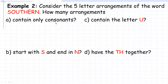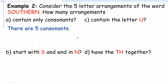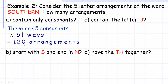In example two, consider five-letter arrangements of the word Southern. How many arrangements contain only consonants? Consonants do not include O, U, or E, so we're only talking about S, T, H, R, and N. There are five consonants, so we're actually arranging all of the consonants. We can arrange them in five factorial ways, or five permute five. Five factorial is 120, so there are 120 different arrangements containing only consonants.